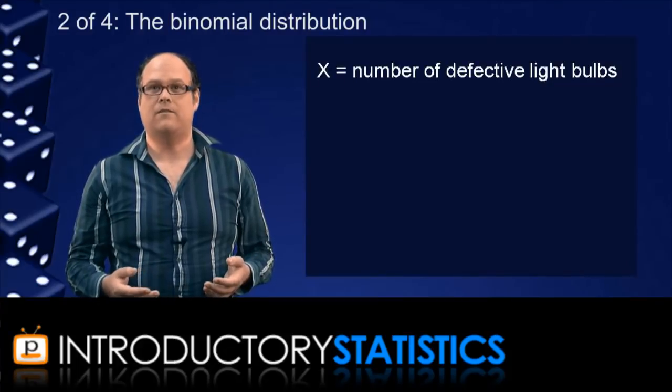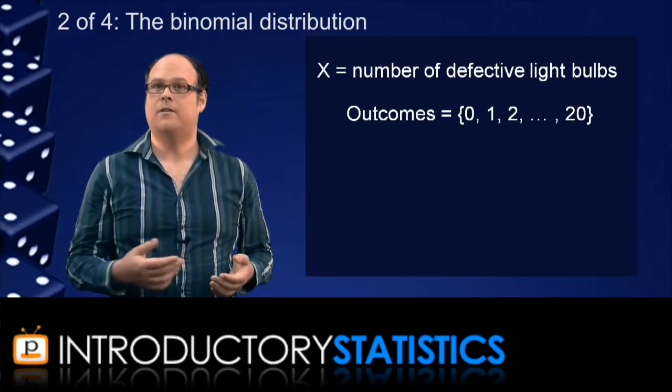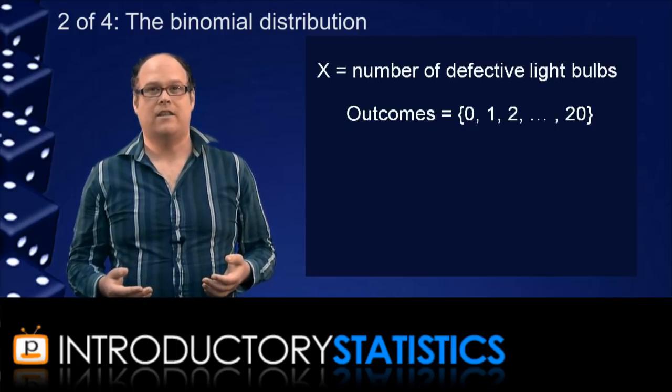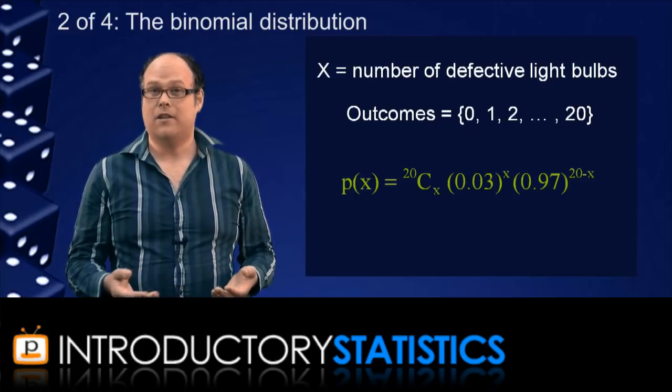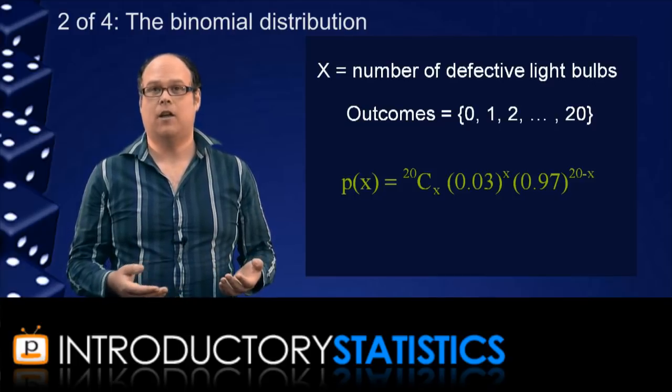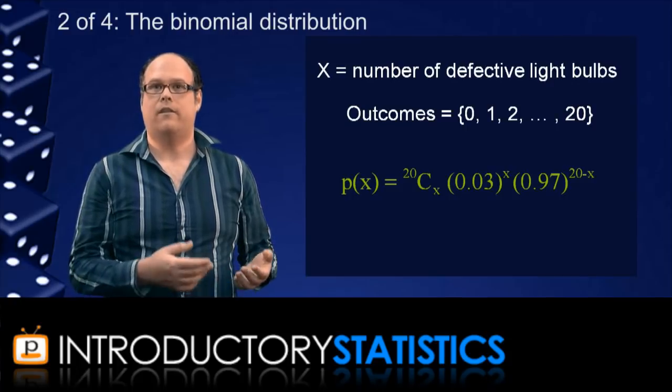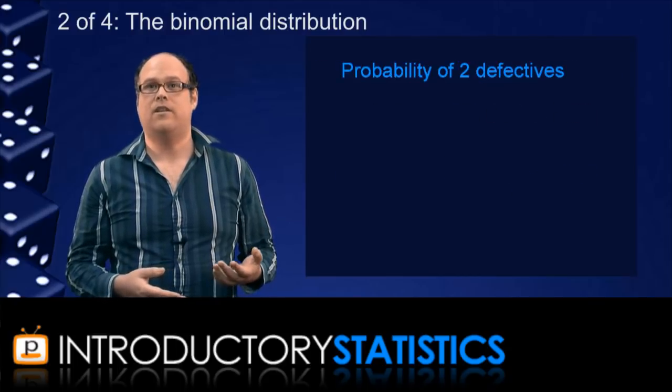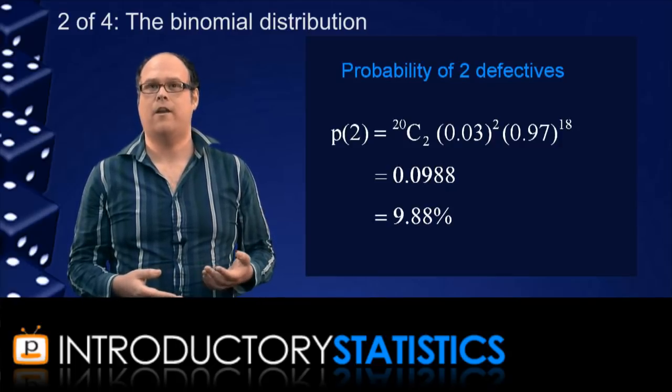If we let x be the random variable that tells us how many are defective, then the sample space for x is the set of all numbers from 0 up to 20 because there can be anything from 0 to 20 defectives. And the binomial distribution for x is given by this formula. The x in that formula is the number of defectives and the formula itself, p of x, is the probability that the number of defective light bulbs is x. You can plug in any whole number for x from 0 up to 20. This formula will tell you the probability that there are that many defectives. For example, if we let x equal 2, the value we would get is 0.0988. So the probability that exactly 2 of the 20 light bulbs are defective is around 9.88%.